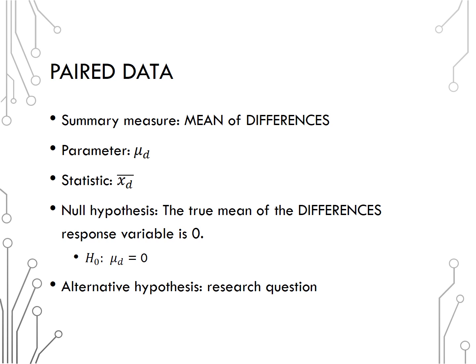Since this is a single quantitative variable we are analyzing, we use the same notation as a single mean, but with a subscript d to denote that we are taking means of differences. The null hypothesis is that the mean of the difference is zero, or that the group or treatment does not matter, and the alternative is based on the research question, as always.